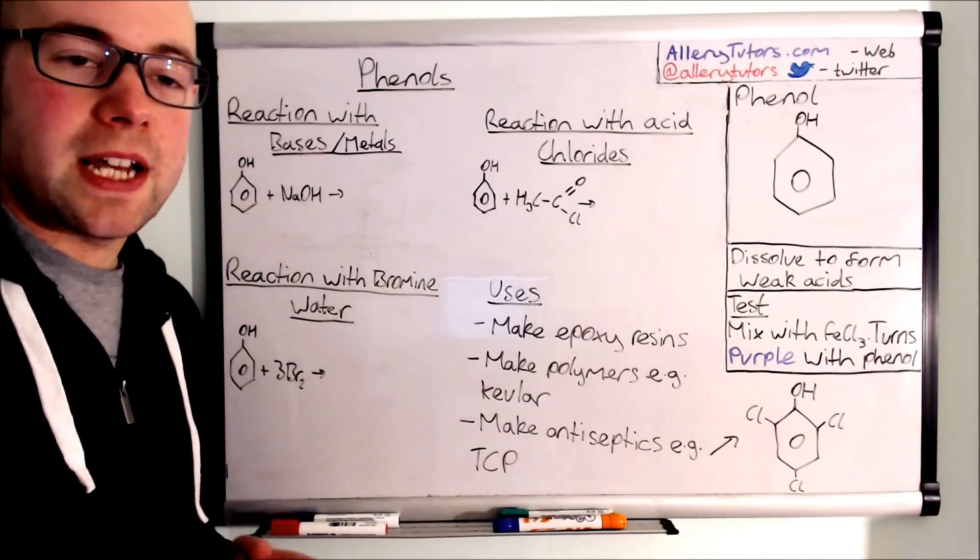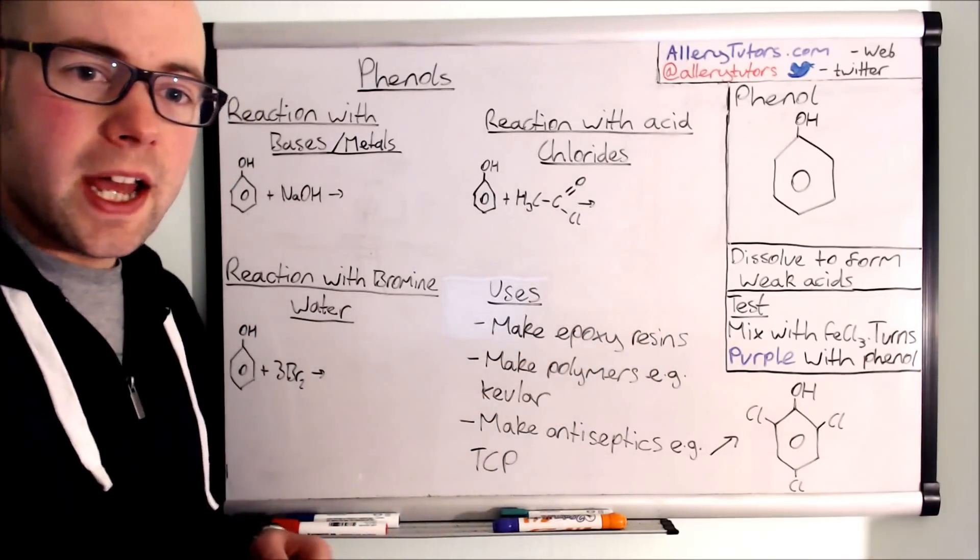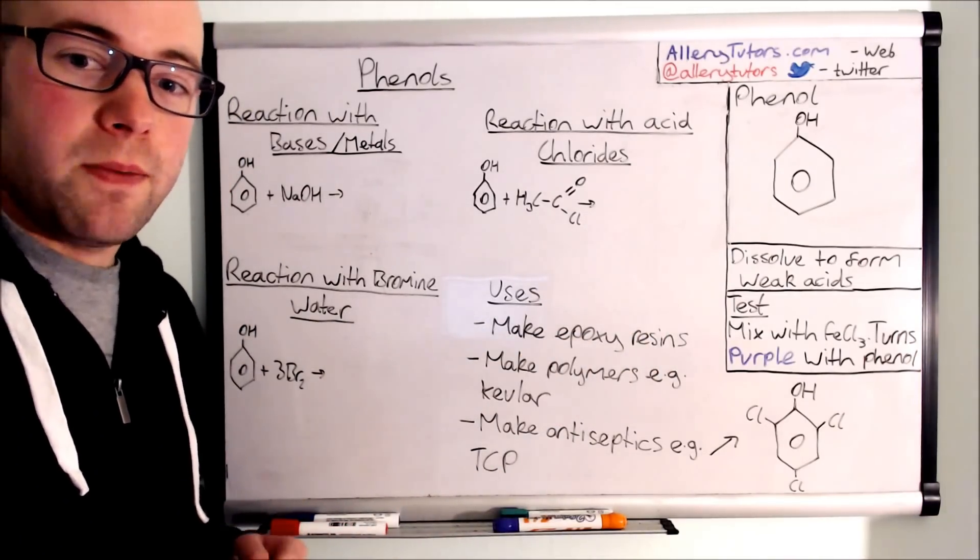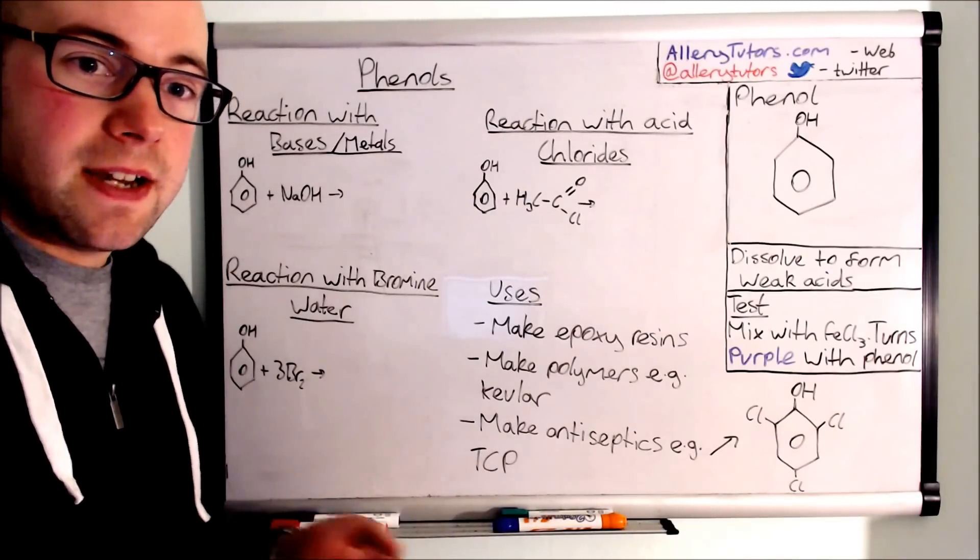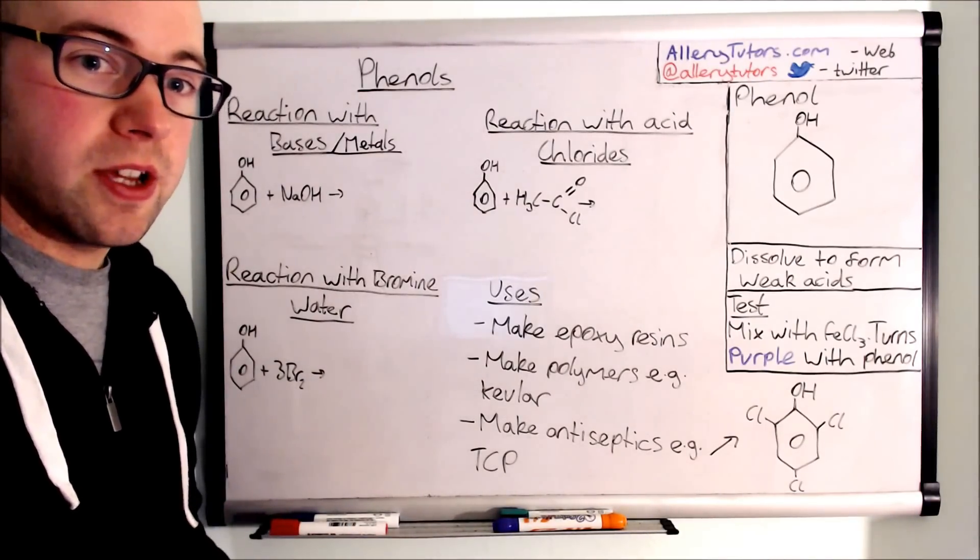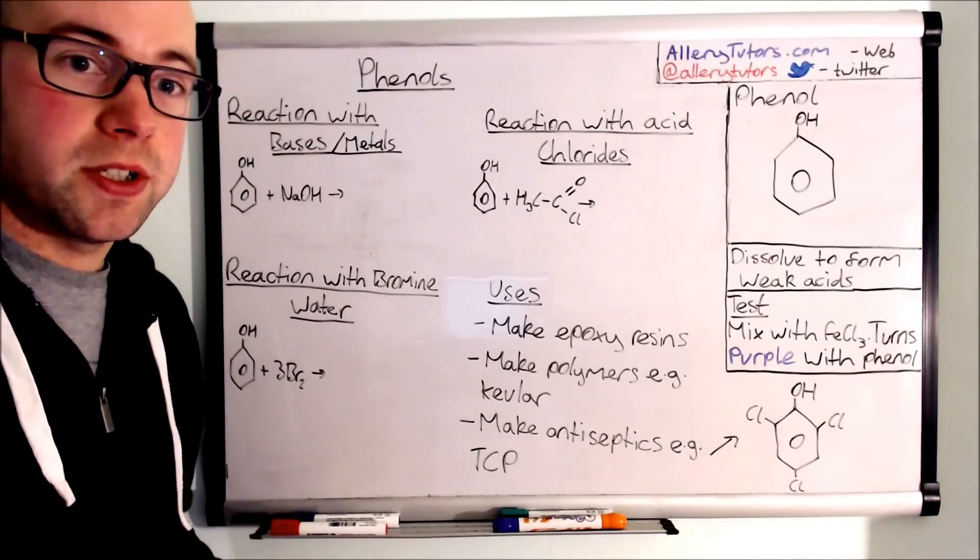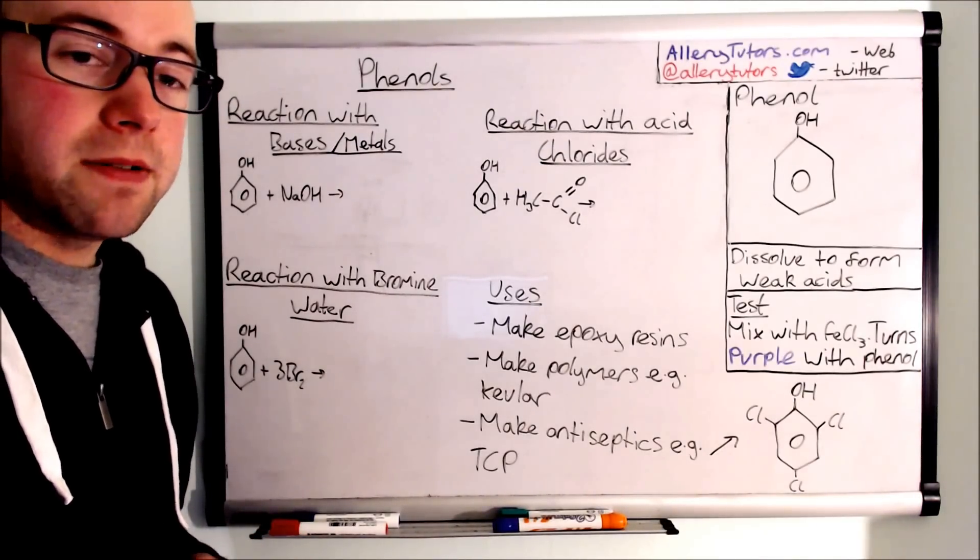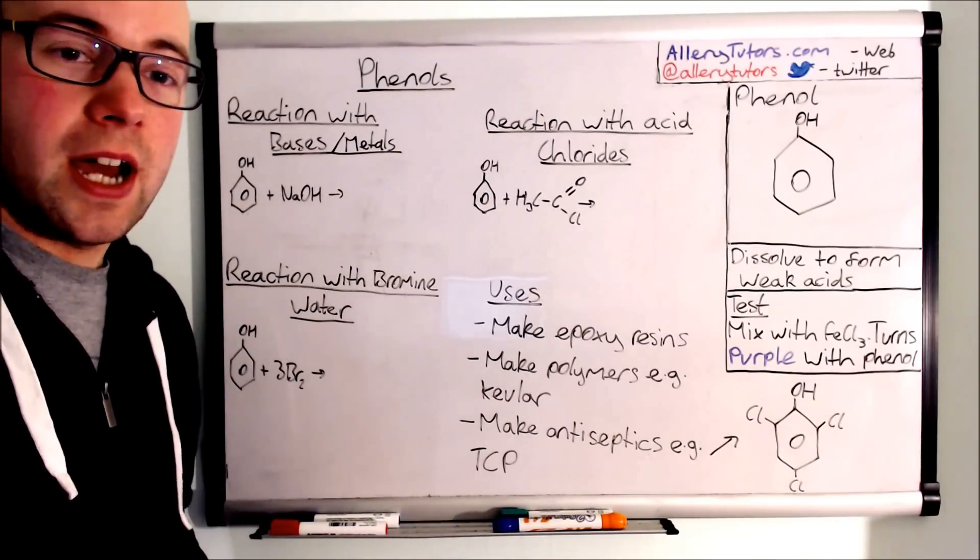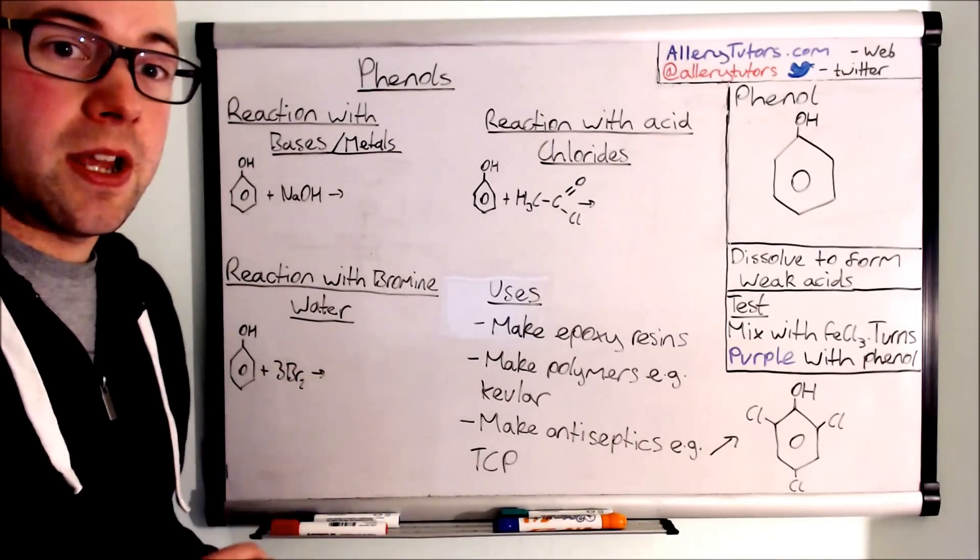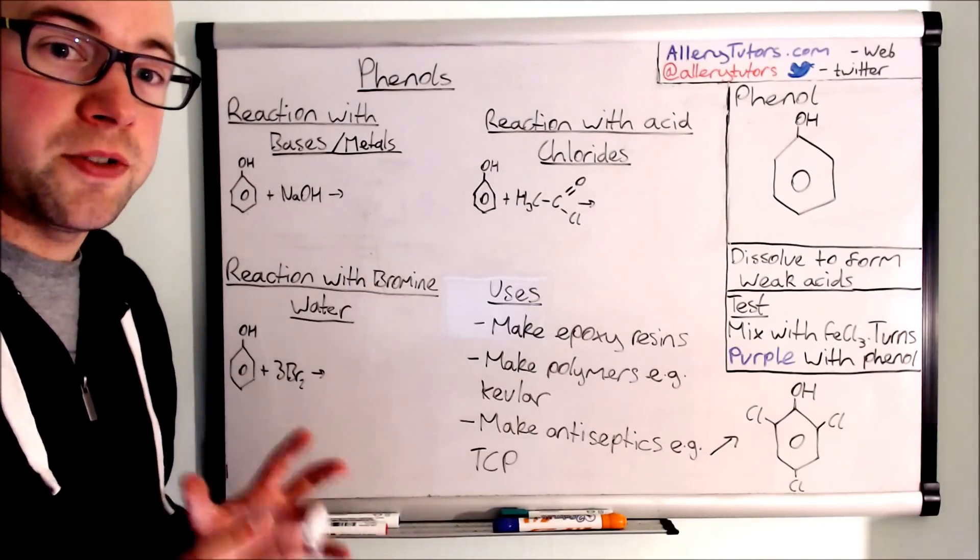Another way of testing for phenols is by adding iron chloride or FeCl3, and if a phenol is present it will turn purple. If we react that with benzene for example, we would see nothing whatsoever, so there would be no colour change. That's really important because you need to be able to know how to distinguish between a phenol and a benzene. Please check your exam board to make sure that phenol chemistry applies, because some boards don't require you to know phenols whatsoever.